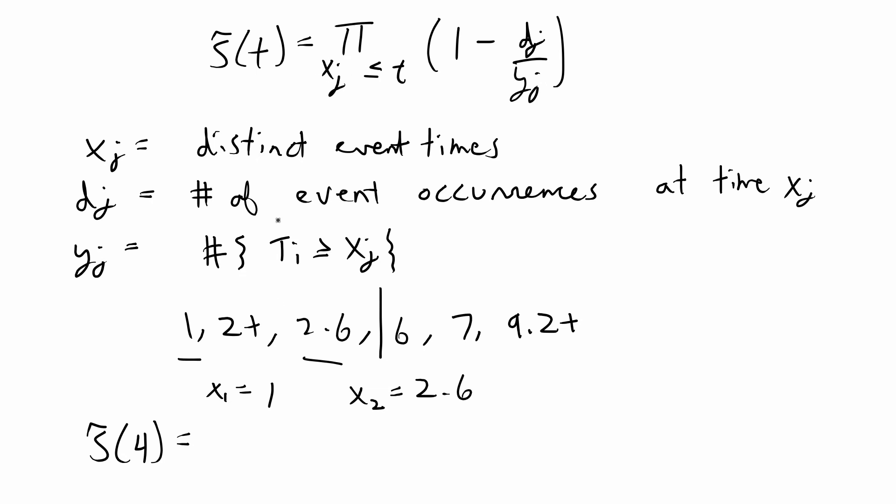I'm going to have two products. The first product is going to be 1 minus d of j. d of j is equal to the number of occurrences at time x of j. At time 1 there's one occurrence, and then y of j is equal to the number of follow-up times at least as big as x of j.